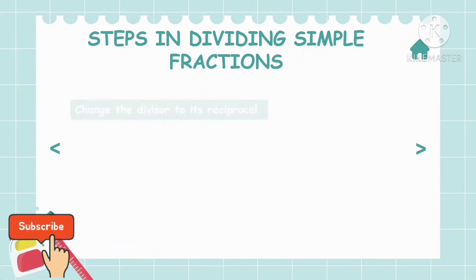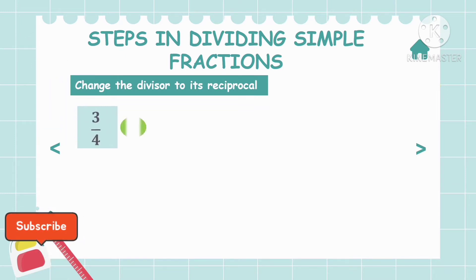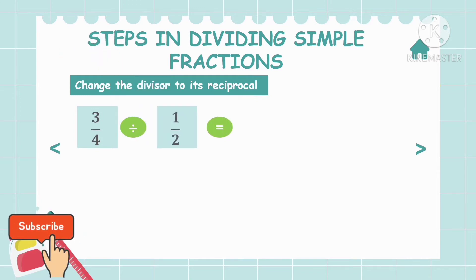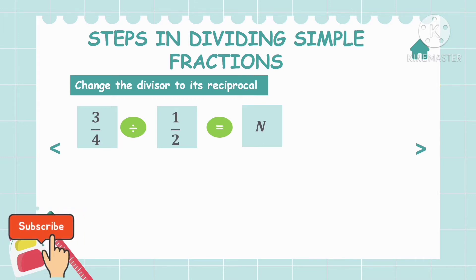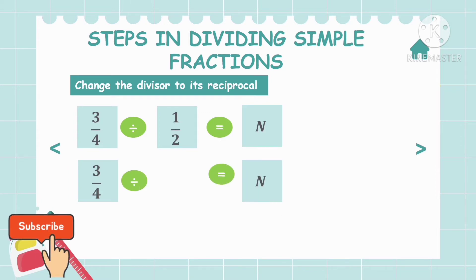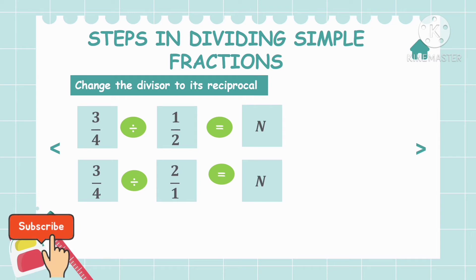Applying the first step, which is changing the divisor to its reciprocal. From the given number sentence, we have 3/4 divided by 1/2 is equal to n. The divisor is 1/2. So we're going to get the reciprocal of 1/2. What you do is flip 1/2 — the numerator becomes the denominator, and the denominator becomes the numerator. So 1/2 will become 2/1.